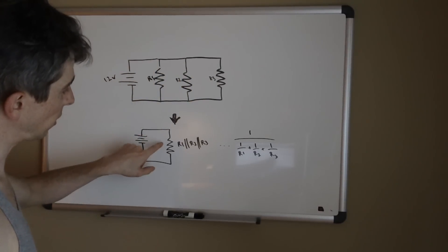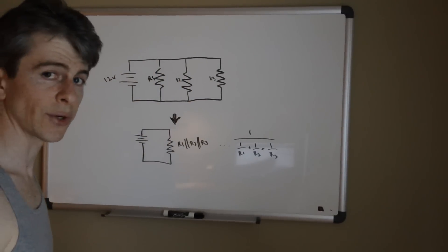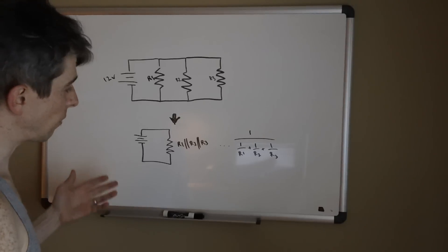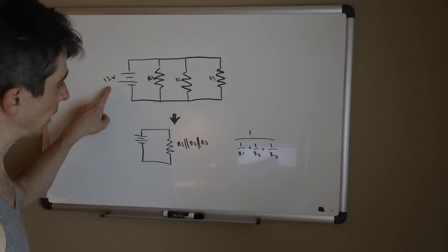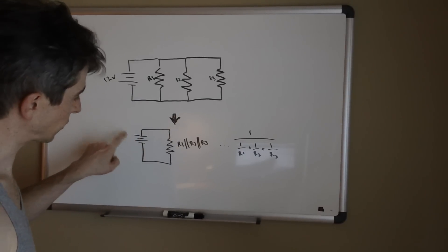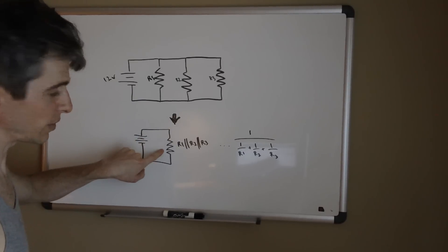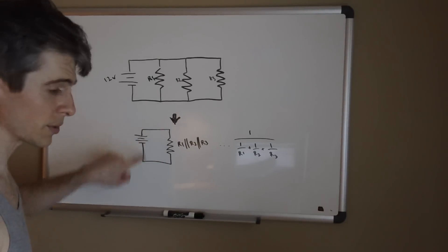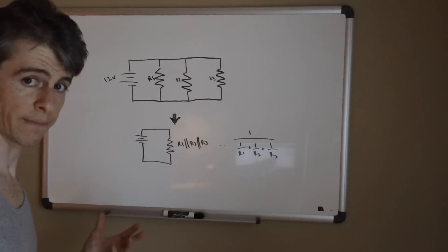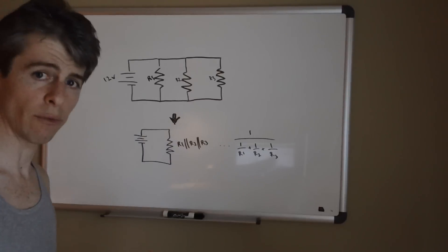So this setup would be the equivalent of a single 4 ohm resistor. Once you know that, if you've got a supply of 12 volts and you've got a 4 ohm resistor right here, then you would have 3 amps of current flowing through the circuit.